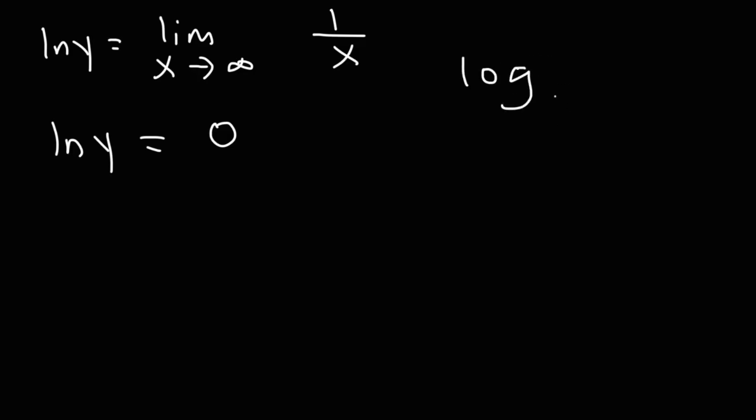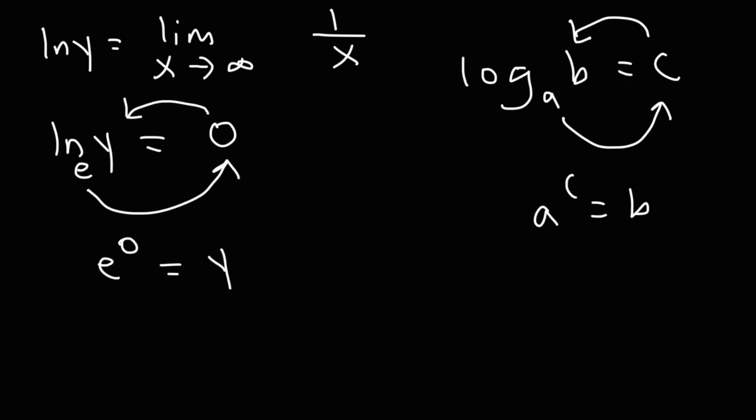Whenever you have a log expression, let's say log base a of b is equal to c, you can convert it into an exponential expression. a raised to the c power is equal to b. Now, the base of a natural log is always e. So, we could say e to the 0 power is equal to y. And anything raised to the 0 power is 1.